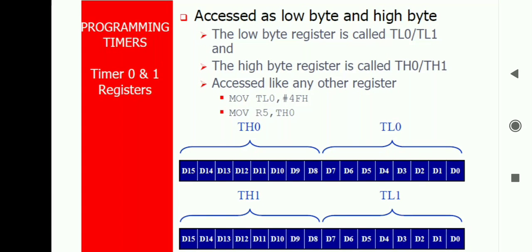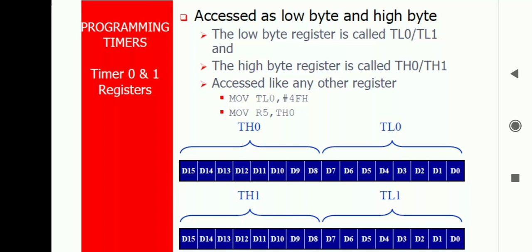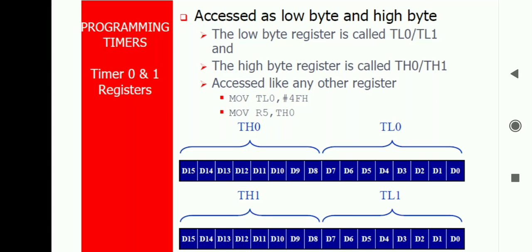The lower byte register is called TL0 and TL1. Similarly, the higher byte registers are called TH0 and TH1, for Timer 0 and Timer 1 respectively. The initial count values can be stored in the timer registers. As shown in the diagram, Timer 0 has TL0 as the lower 8 bits and TH0 as the upper 8 bits. Similarly, Timer 1 has TL1 and TH1. In such a way, we can use the timer registers.